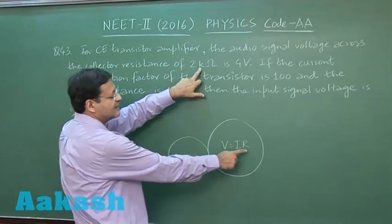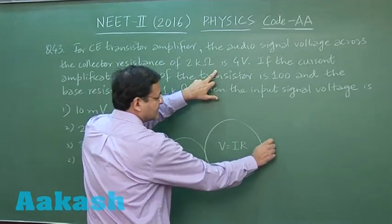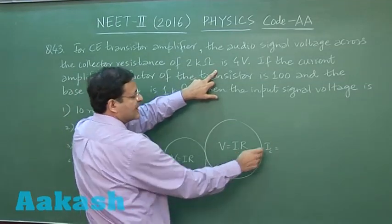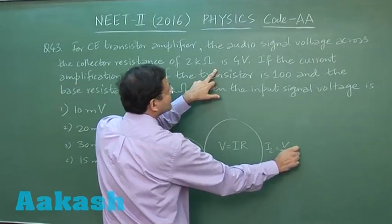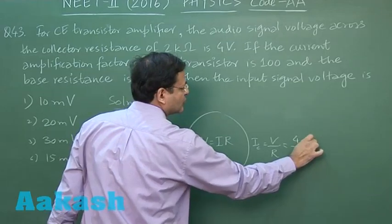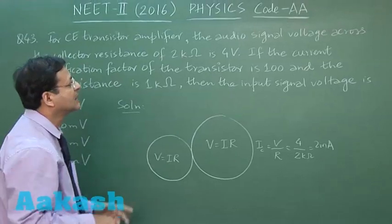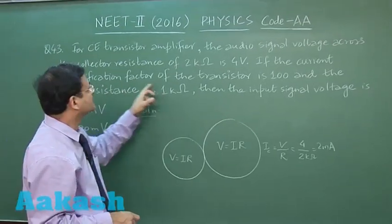This is given as 2 kΩ and voltage is 4V. So you can calculate what is this current, the collector current. This is V/R. So this is 4V upon 2 kΩ, which makes it 2 milliampere. 2 milliampere is the output current.